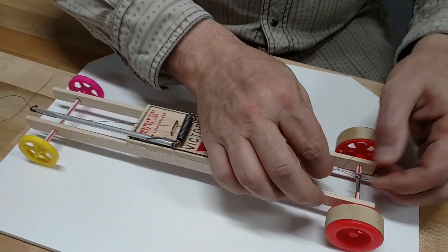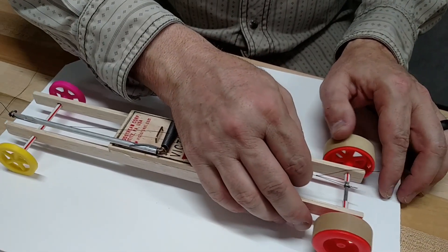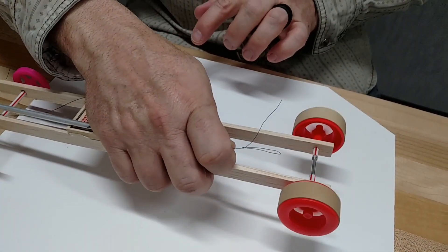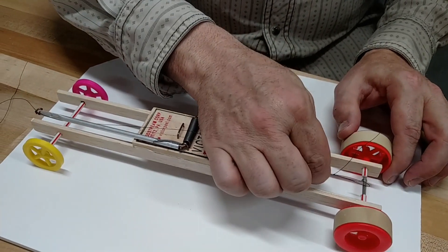Now you don't want it to be too long because when it's done unwinding, you want the string to let go so that the wheels will keep spinning and your car will coast. So you definitely don't want to tie it to the axle.